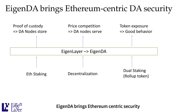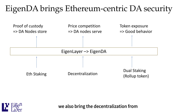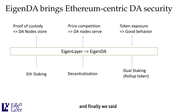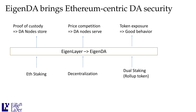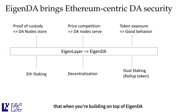EigenDA brings Ethereum-centric security. The architecture of EigenDA has ETH stakers participating in Eigenlayer and restaking into EigenDA. We also bring the decentralization from the Ethereum node operator set to EigenDA, and we allow rollup tokens to be used natively for dual staking. All of these things ensure high data availability security when you're building on top of EigenDA.